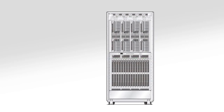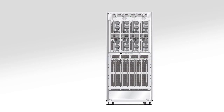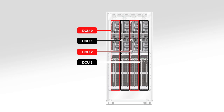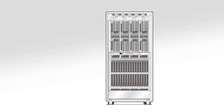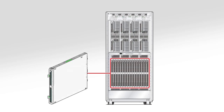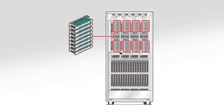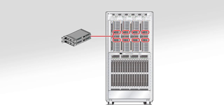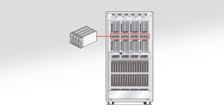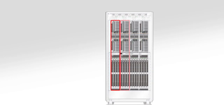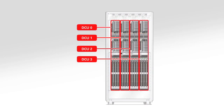From the rear of the server, you can see that the hardware resources are divided into four groups called Domain Configurable Units, or DCUs. Each DCU contains processors and memory, PCIe expansion slots, integrated network ports, and integrated storage. DCUs provide the building blocks of physical domains.